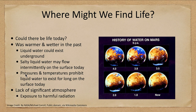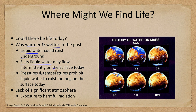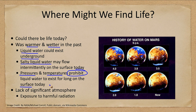So where might we find life today on Mars? We do know that it was warmer and wetter in the past, and liquid water could still exist underground today. There may be some kind of very salty liquid water that could flow on the surface in some craters. However, pressures and temperatures absolutely prohibit liquid water from existing for long on the surface — it would very quickly either freeze or vaporize into a gas, as there is insufficient pressure.